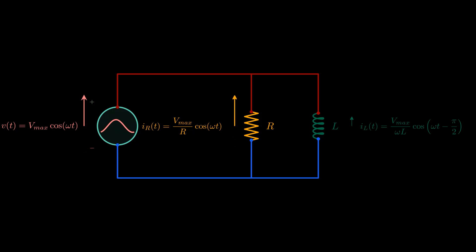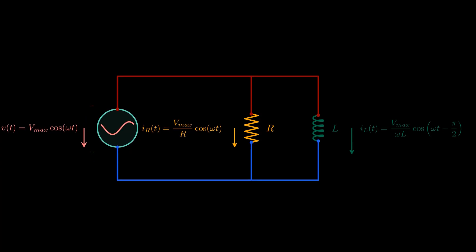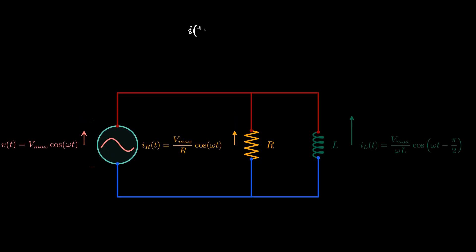So now we have two currents: one in phase feeding the resistor, and one out of phase magnetizing and demagnetizing the inductor. The total current is the sum of these two currents, the in-phase one and the out-of-phase one. This sum gives us a cosine function lagging by some angle phi depending on the resistance and the inductance of our circuit.